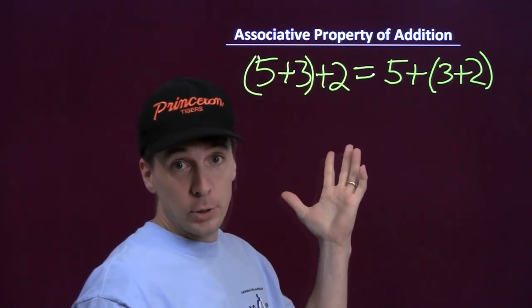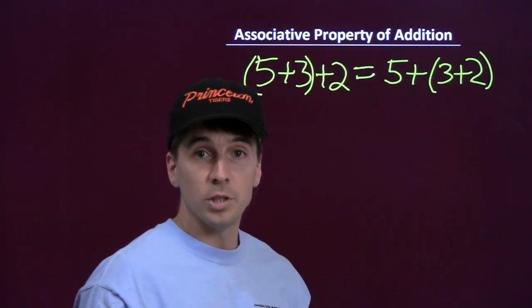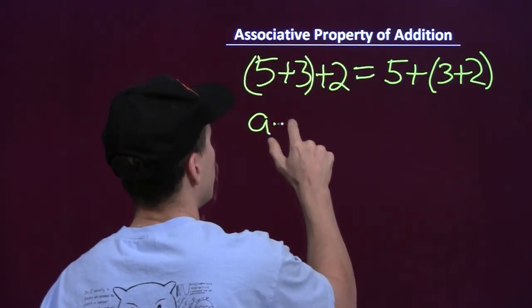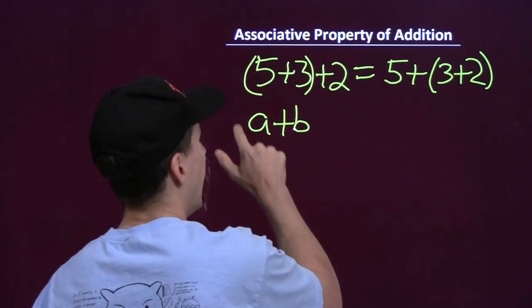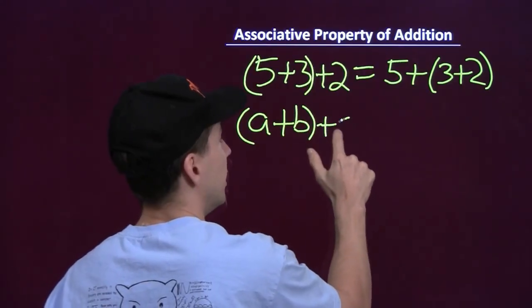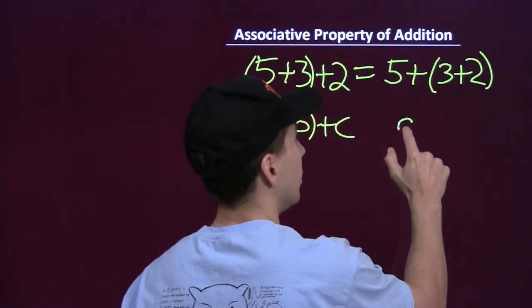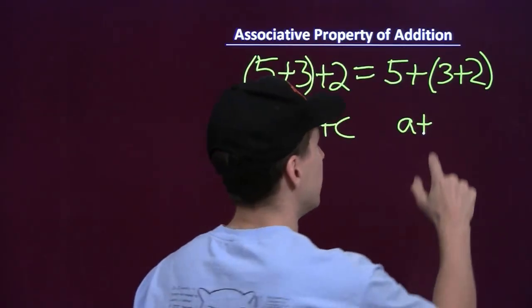Now, there's nothing special about five, three, and two. We can do this with any three numbers, and we'll use variables to show that. If we take the three numbers A, B, and C, and we add A and B first, and then C, we're going to get the same thing as if we started off with A and added that to the total of B and C.